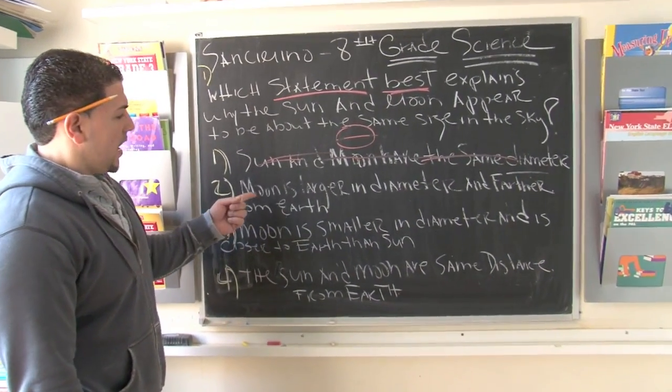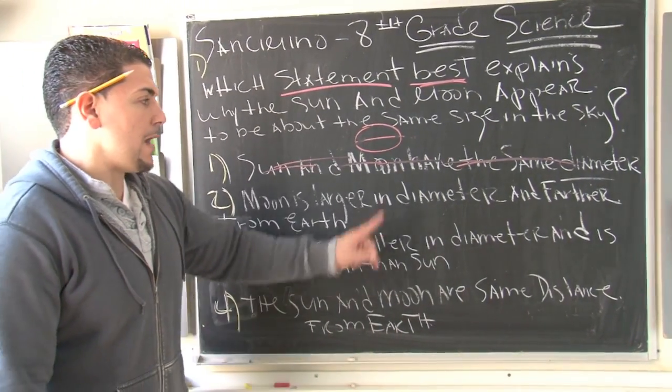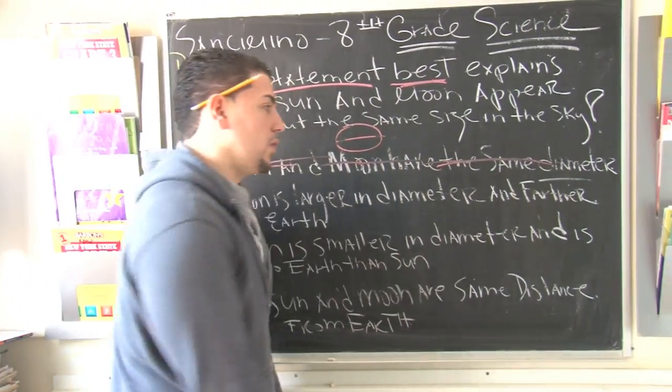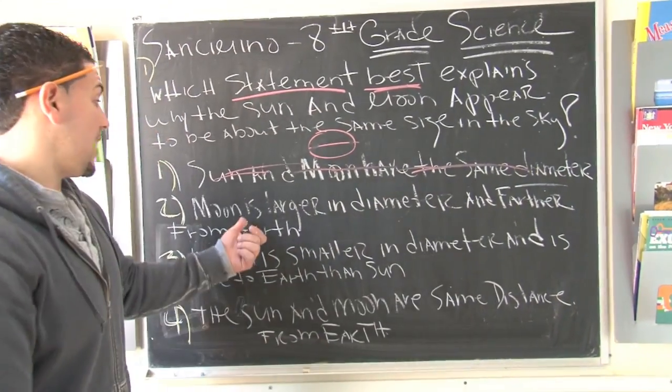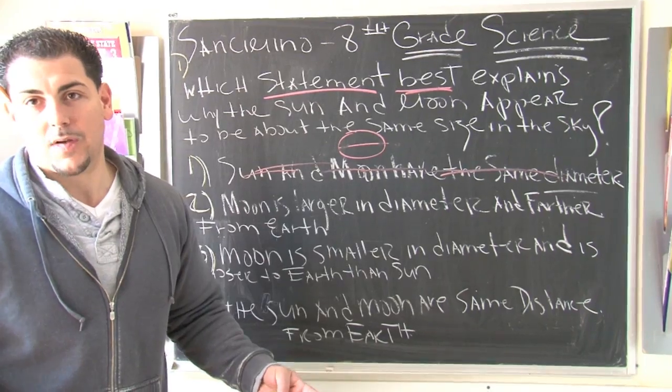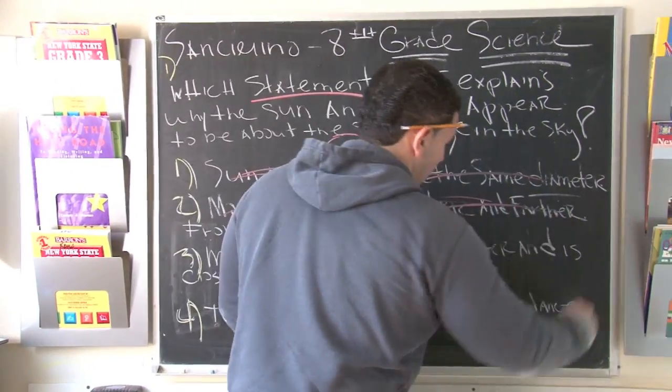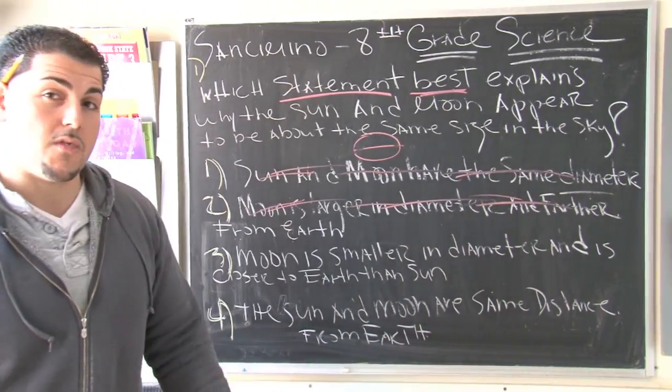Going forward, number two says the moon is larger in diameter and farther from the sun. Well, maybe the second part of this might be cool, farther from the sun, but it just said again that the moon is larger in diameter. But we know from the first choice that that's impossible. The moon and the sun have different diameters. So where are we at? We're at the 50-50 mark right now.